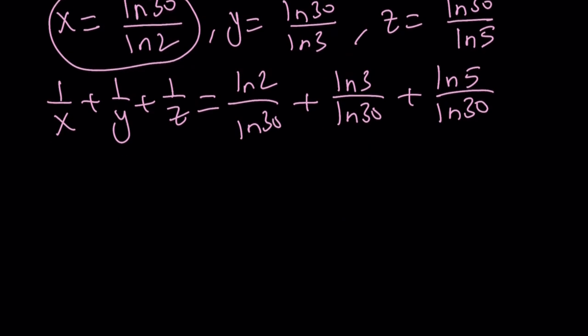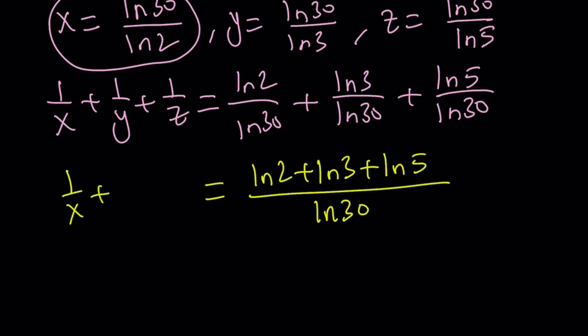Yay we got a common denominator, awesome. Let's go ahead and add these up. This is going to be ln 2 plus ln 3 plus ln 5 over ln 30. All right, so this is 1 over x plus 1 over y plus 1 over z. That's what I'm trying to find and what is that equal to.